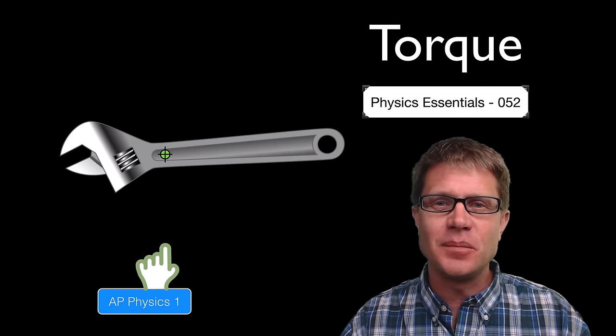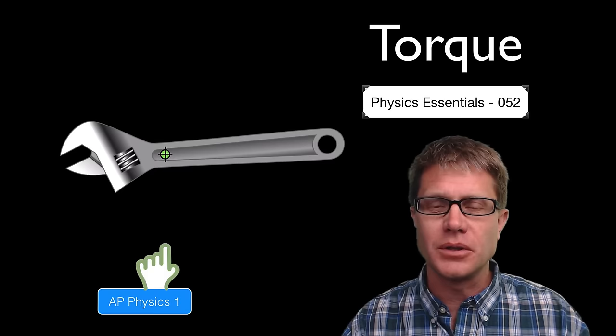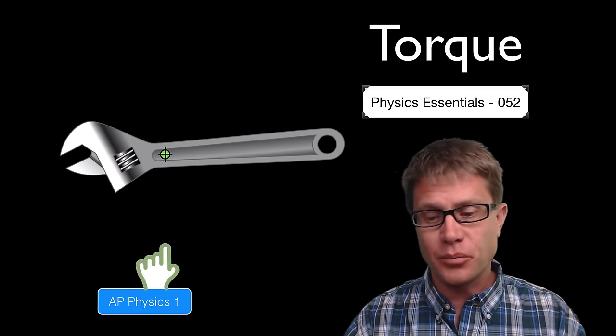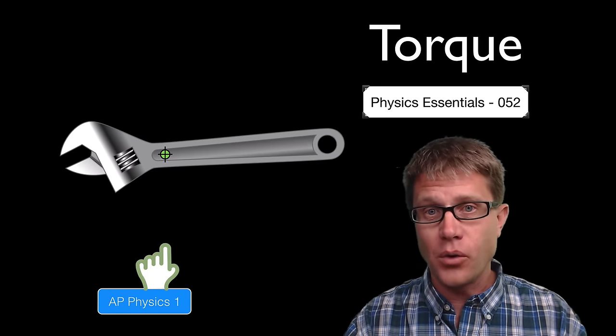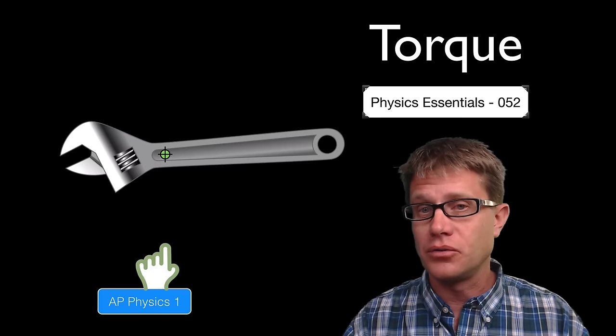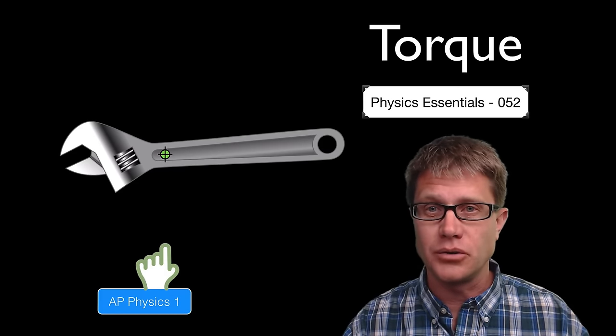Hi. It is Mr. Andersen and this is AP Physics Essentials video 52. It is on torque. Torque is simply the product of the force which is perpendicular to the lever arm, and this only works in rotational motion.